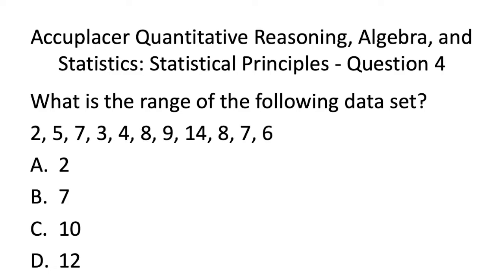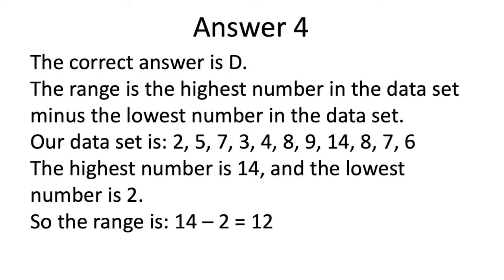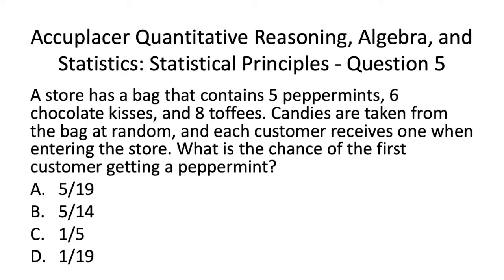Let's have a look at Acuplacer QAS Statistics Practice Test Question 4. The correct answer is D. The range is the highest number in the data set minus the lowest number in the data set. Here is our data set again. As you can see, the highest number is 14 and the lowest number is 2. So the range is calculated as shown.